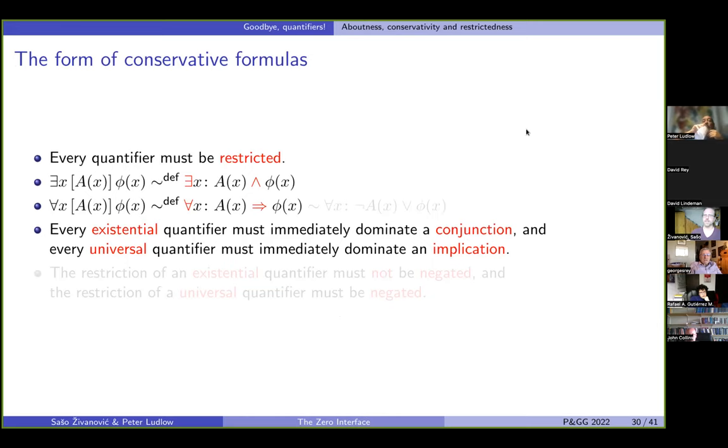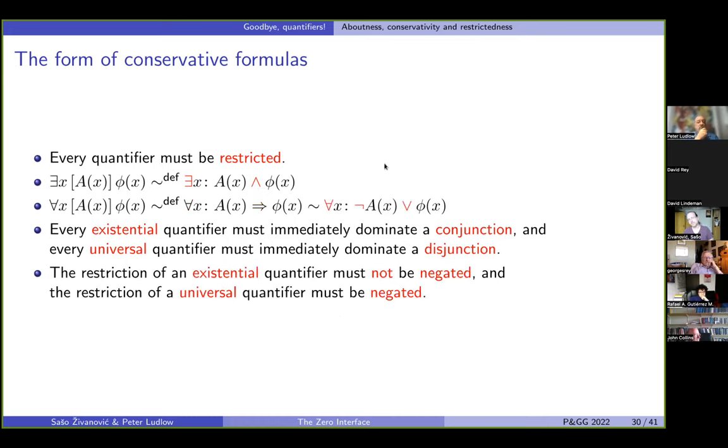However, what we are really interested here is in the form of conservative formulas. And it turns out that this form actually is, it's called restrictedness. So conservative formulas are restricted. What does that mean? Actually, you already know, it means that every quantifier in the formula has to be restricted, and you're familiar with restricted quantifiers, you know that the existential, in the restricted format, the existentials are friends with conjunctions, and the universals are friends with implications, or because we don't like implication, we want to write it using negation and disjunction, to be in the Boolean world, then universals are friends with disjunctions, and also require the restriction ax to be negated, unlike the existential quantifiers, where it shouldn't be negated.